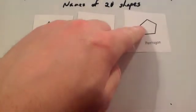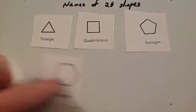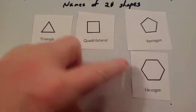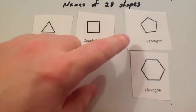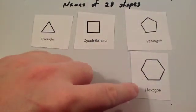A 5-sided shape is called a pentagon. So if it's got 5 sides, it's a pentagon. 6 sides, a hexagon. To remember a pentagon, I think of the Pentagon building in America. A hexagon, think of the word hex, 6.